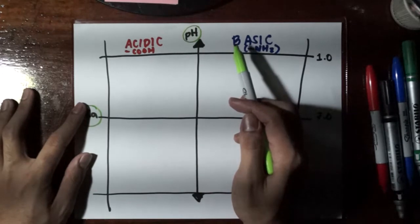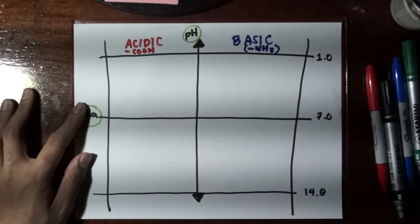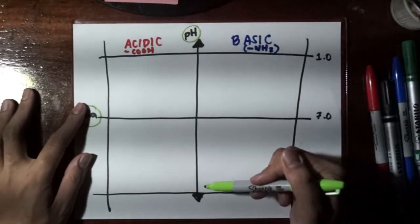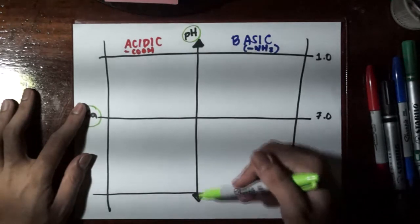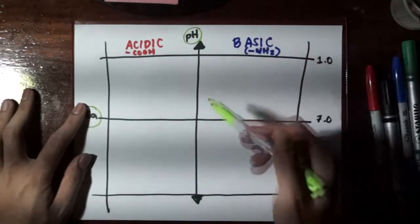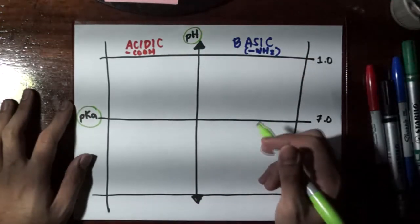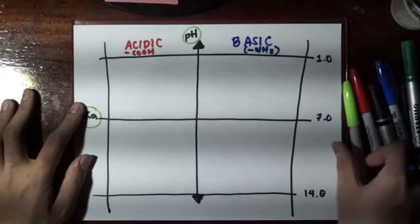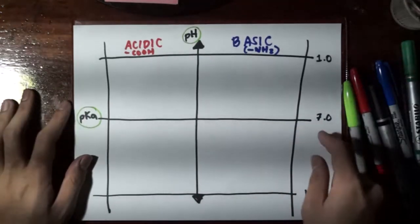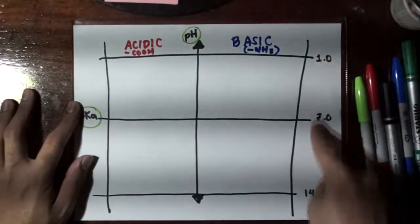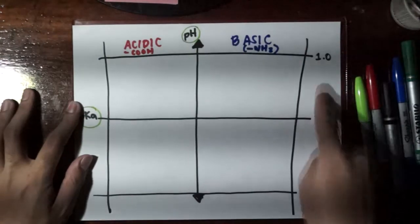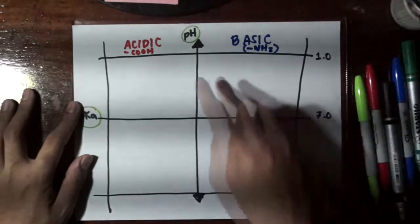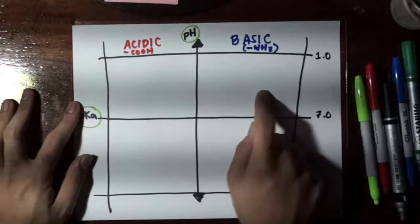If you add a base, its pH would naturally increase. And if you add an acid, its pH would go down. That's basic chemistry. But here, let's see what happens if the pH is low, something below 7, and I have these two functional groups right here.